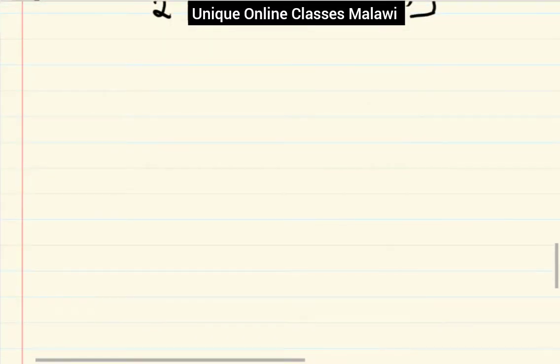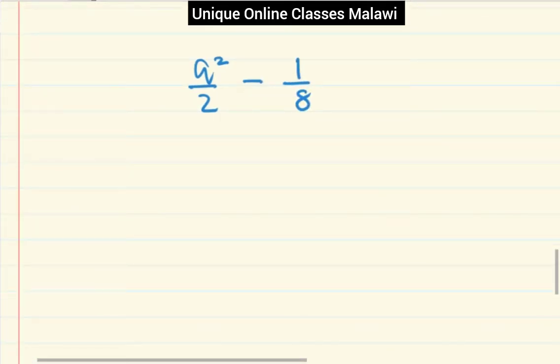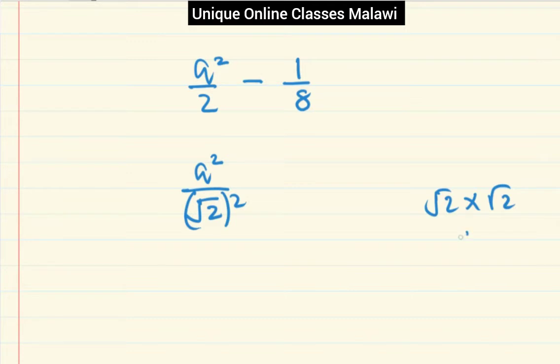So the question was a squared divided by two, then minus one over eight. If I can get a little bit more than one over eight squared.